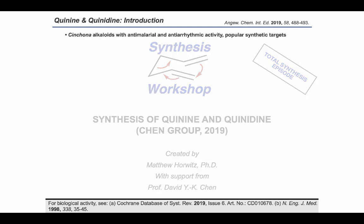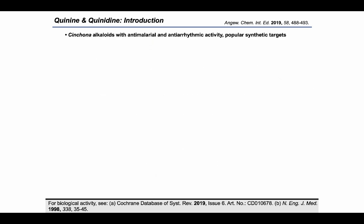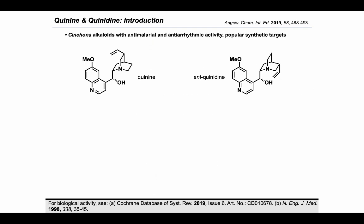Quinine and quinidine are well-known members of the cinchona alkaloid family of natural products. In addition to their anti-malarial and anti-arrhythmic activity, they are also conspicuous for their appearance as popular targets of total synthesis. What makes the approach in this episode unique, however, is an idea that becomes possible when we recognize the stereochemical relationship between quinine and the enantiomer of quinidine.